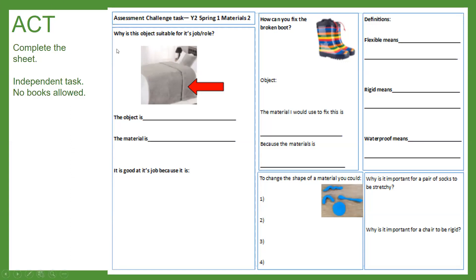The first section asks: why is this object suitable for its job role? The arrow is pointing to an item on the bed. First you need to think about what this object is, what material it is made from, and then why it is good at its job — why is this material used rather than something else?